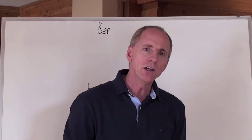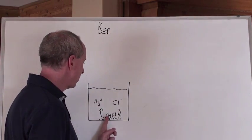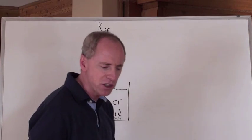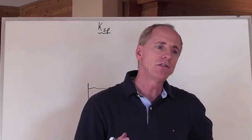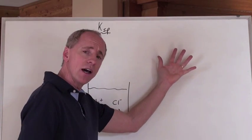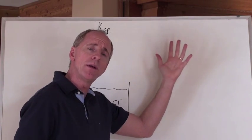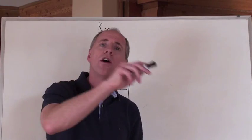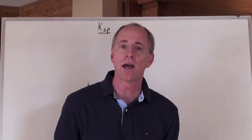So we could write that as Ag+ plus Cl- makes AgCl and then write an expression for it. But you know what? That leaves us always with the solid chemical on the product side of the reaction, and so the equilibrium expression would be one over something. That's just messy and we don't want to do that.